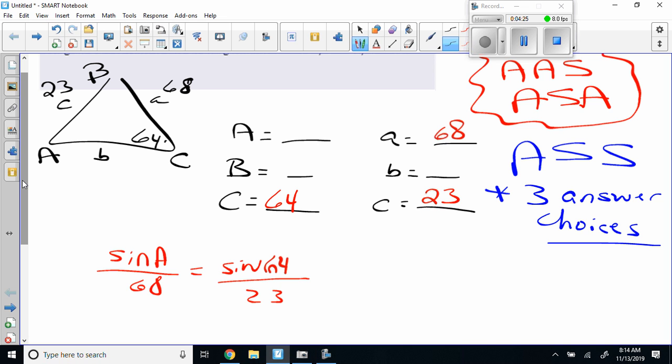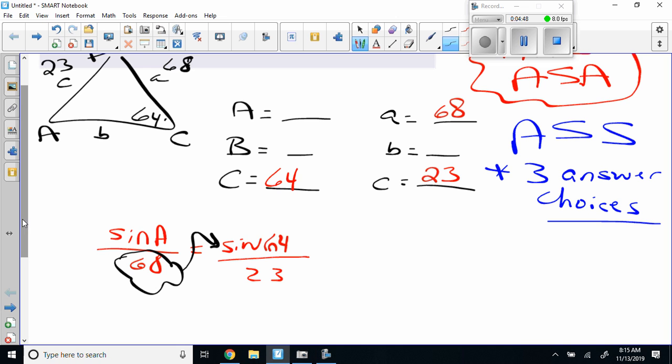So if I solve this for angle A, let's see, I've got the sine of A over 68 equals the sine of C, which is 64 over 23, right? And if we do the really cool thing of, hey, this right here goes where? There, and then I've got sine A on top, right? I need to get rid of the sine part of it, right?